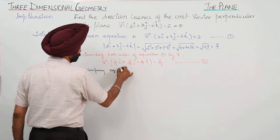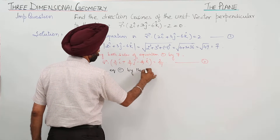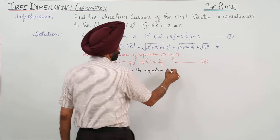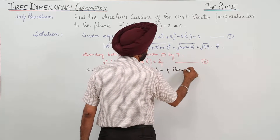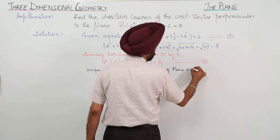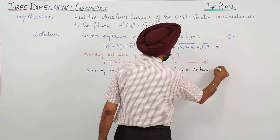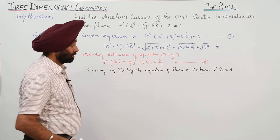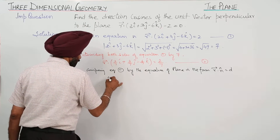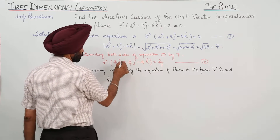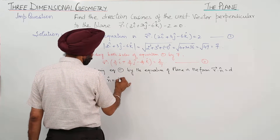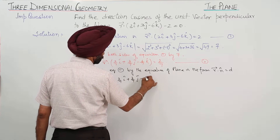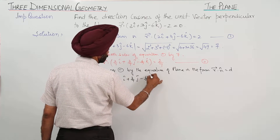Comparing equation 2 with the standard equation of a plane in the form vector r dot n cap equals d, we get n cap equal to 2/7 i cap plus 3/7 j cap minus 6/7 k cap.